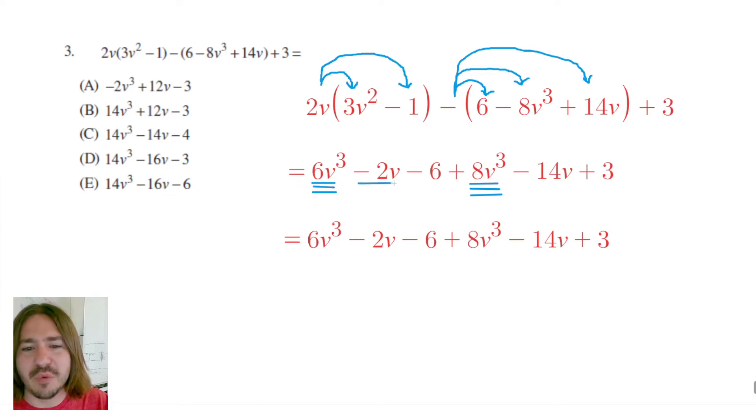But I do have two linear terms. In other words, a term that has a variable with just an exponent of 1, which you don't see written. Finally, I've got two constants. This negative 6 and this positive 3. So I'm going to combine each of these groups one by one.